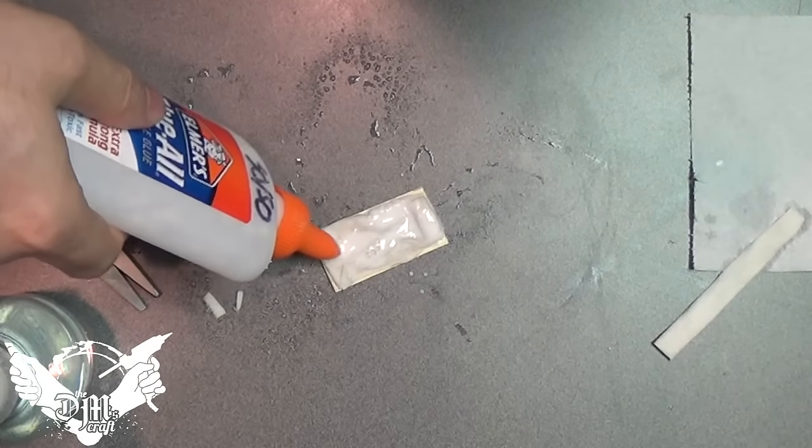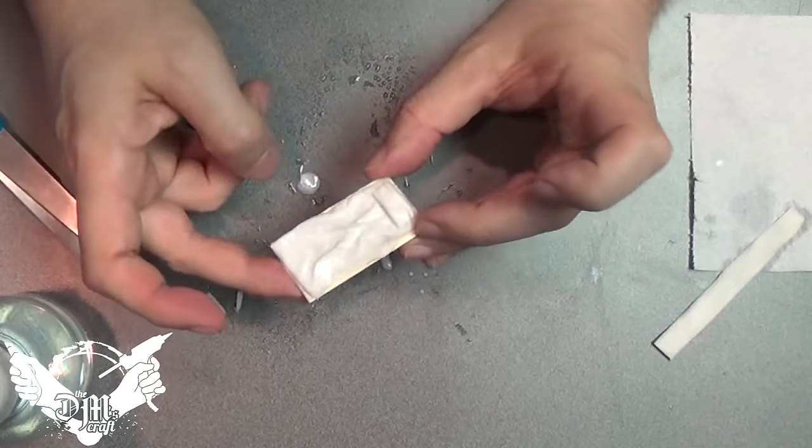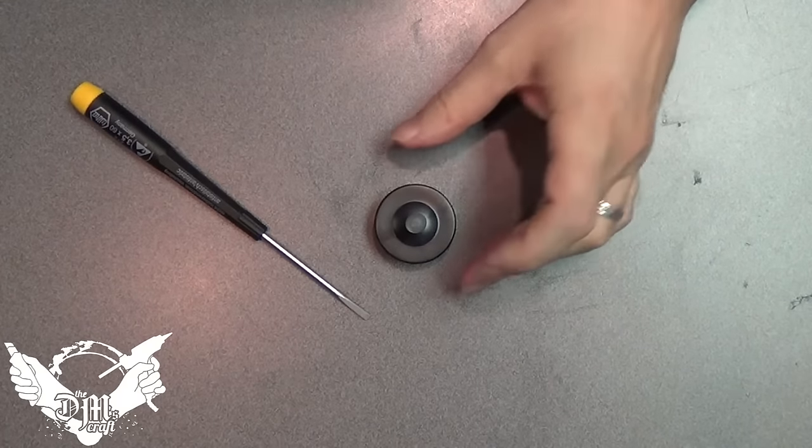Now I'm going to use my 50-50 water white glue and put it on, soak it into the cot and then let it dry.